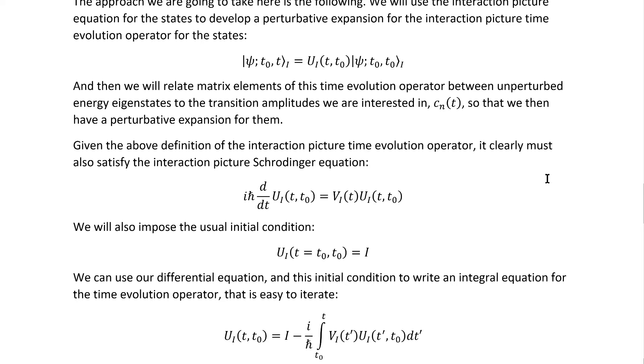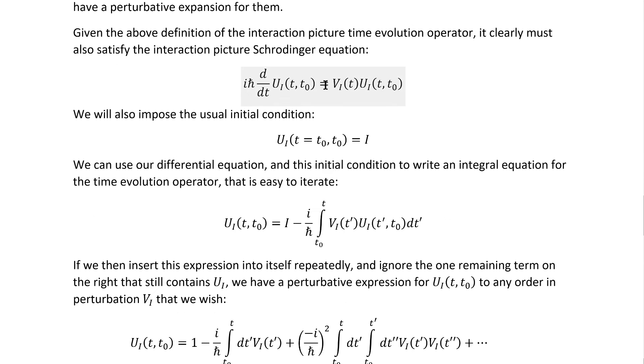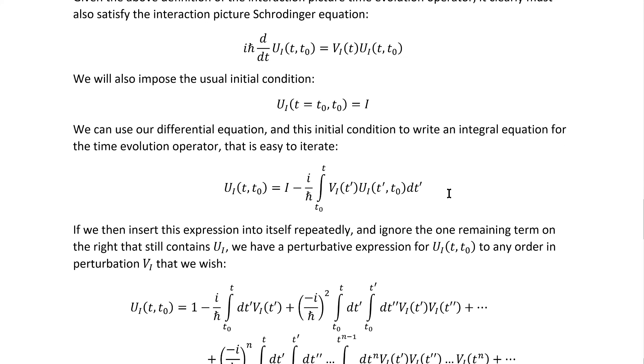Given this definition of the interaction picture time-evolution operator, it must clearly also satisfy the interaction picture Schrödinger equation, which gives us an equation to start our expansion with. We'll also impose this ordinary initial condition. If we're time-evolving from one time to the same time, it should just leave it unchanged. It should just be equivalent to the identity operator. We can then use this differential equation and this initial condition to write an integral equation for the time-evolution operator that's easy to iterate. Simply this, nothing unusual.